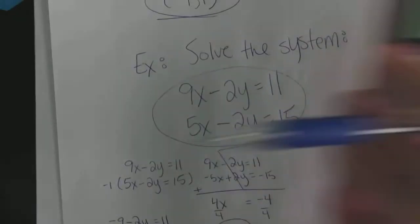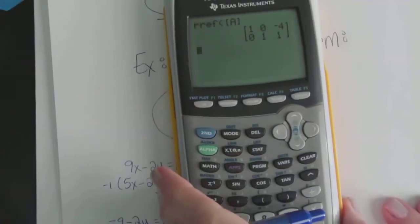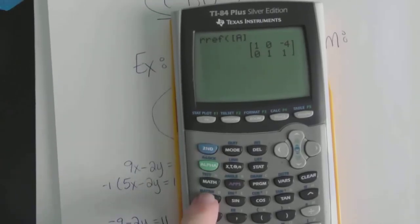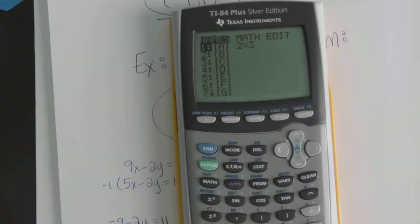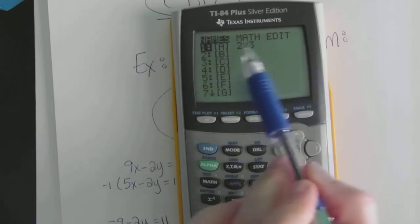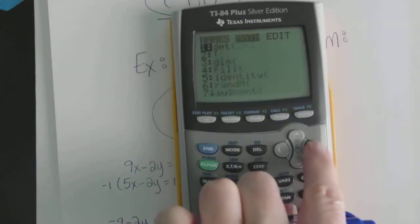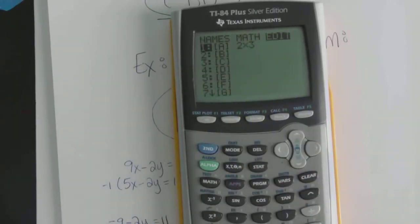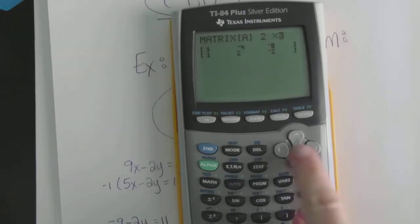Do you remember what to do? Take your calculator. We start by hitting second matrix. We kind of work from the right to the left. The first thing we have to do is edit the matrix because we've got our old junk in there from the first example. So hit enter.